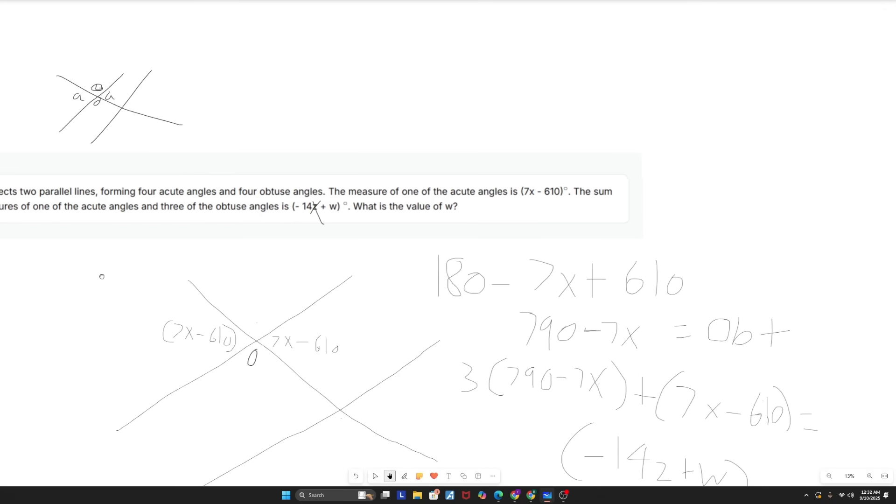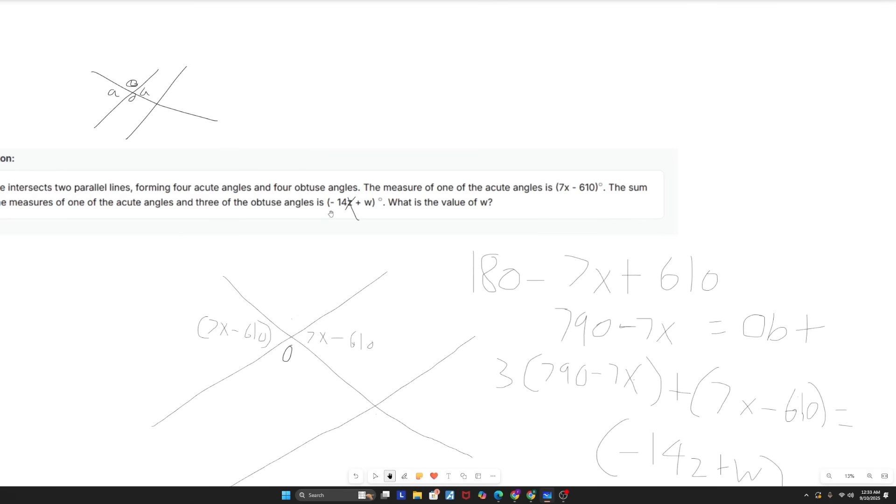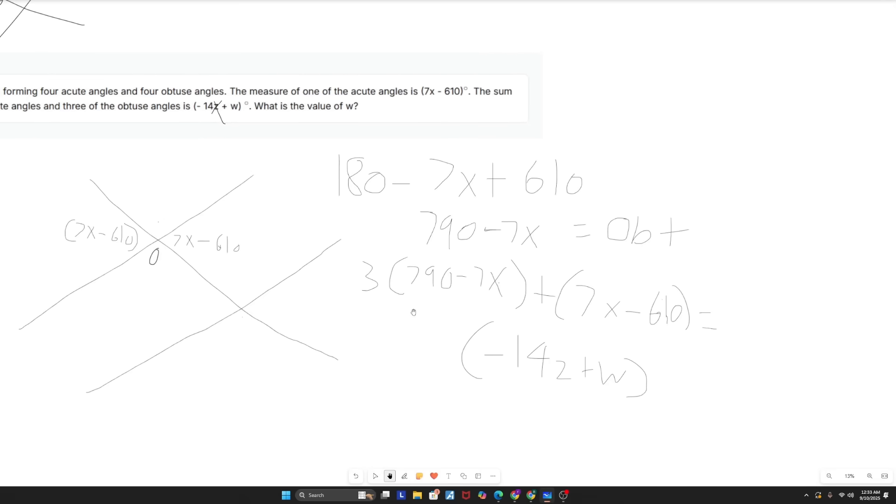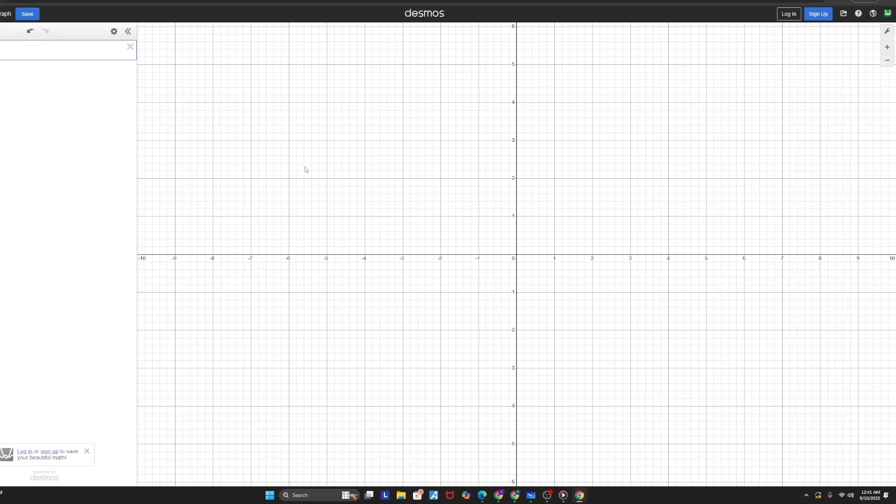Now we can go ahead and work on the second part of the problem. So three times my obtuse angle plus one acute angle is going to get me negative 14x plus w. So three times 790 minus 7x plus 7x minus 610 equals negative 14x plus w. So now when you perform that algebra, I'm going to go ahead and do that on Desmos actually. All right, so I want to compute this on Desmos using a regression. So the way I'm going to do that is 3 times 790 minus 7x1. I need that to perform a regression. All my x's and y's have to have subscripts. So this plus my acute angle, which is 7x1 minus 610. Instead of the equal sign, we're going to use the tilde sign. And that's going to be equal to negative 14x1 plus w. And once you do that, you'll see that you'll get 1760 for the value of w, which is going to be your correct answer.